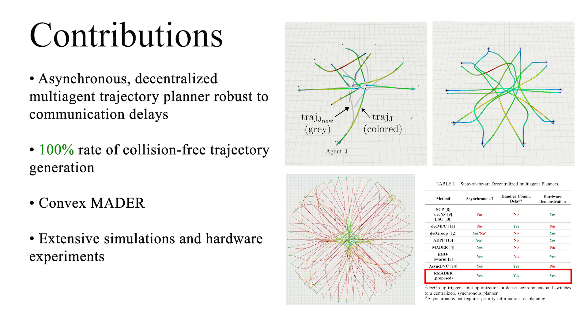RobustMator successfully generates a 100% rate of collision-free trajectories under up to 300 milliseconds of communication delays, while other approaches generate collisions.